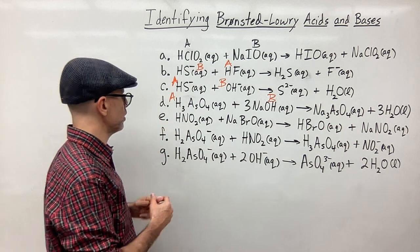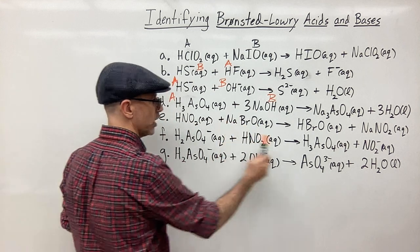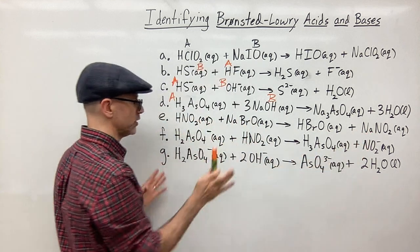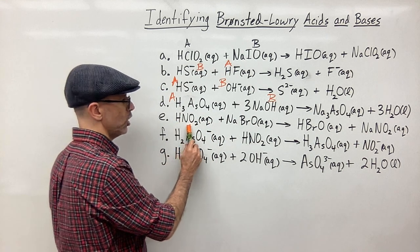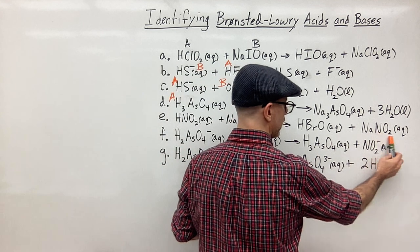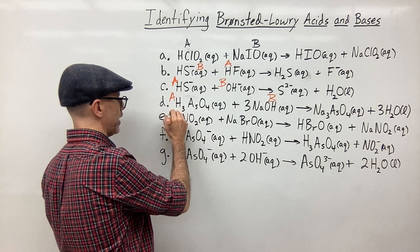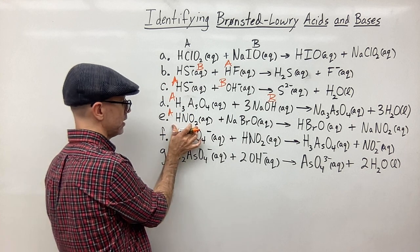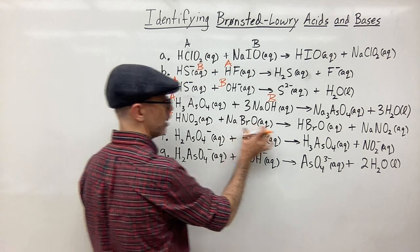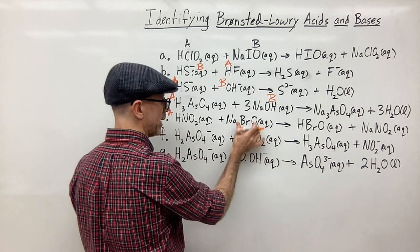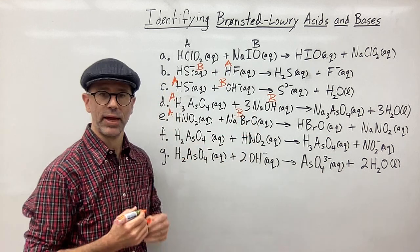Next we have HNO₂ and BrO⁻. We ignore the sodium since it's just balancing charge. HNO₂ becomes NO₂⁻ on the product side, so it lost the hydrogen — HNO₂ is the acid. BrO⁻ picked up the hydrogen to become HBrO, so BrO⁻ is acting as the base.